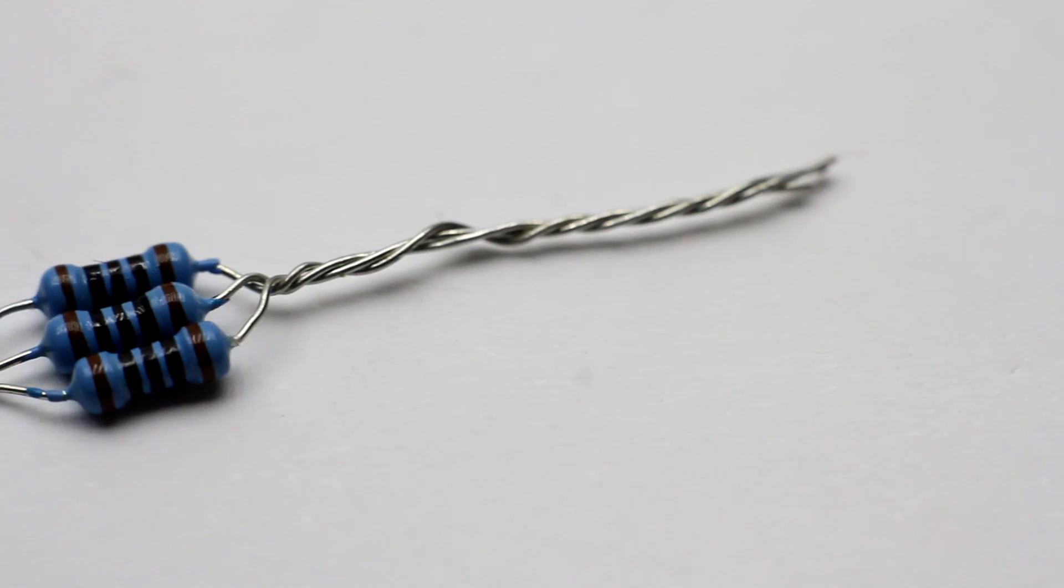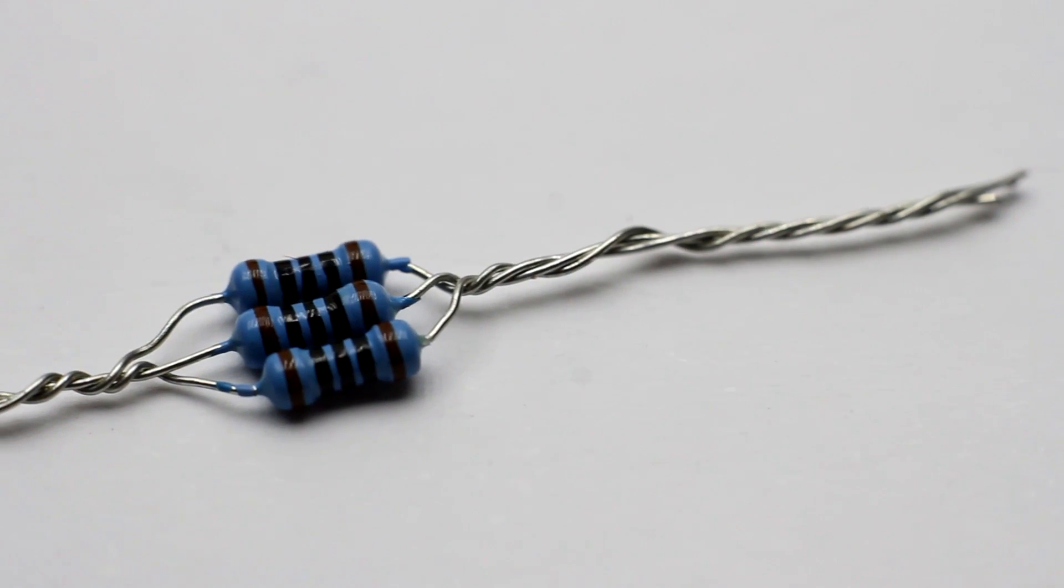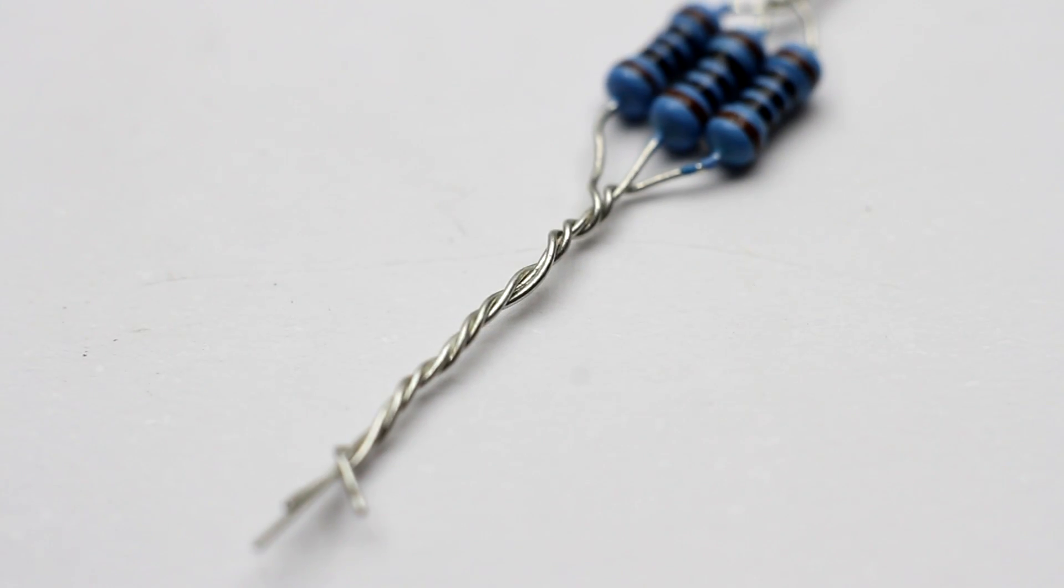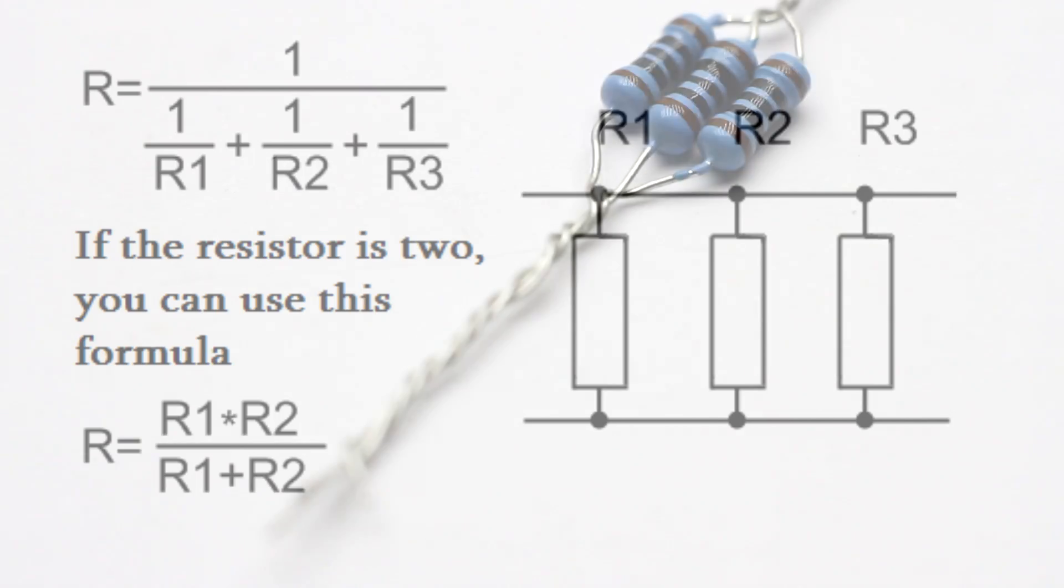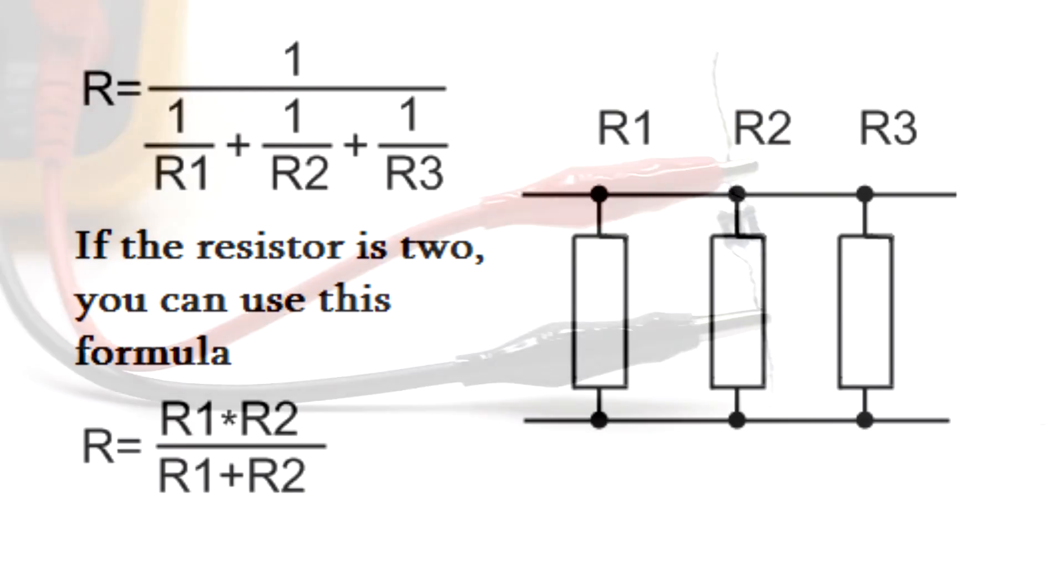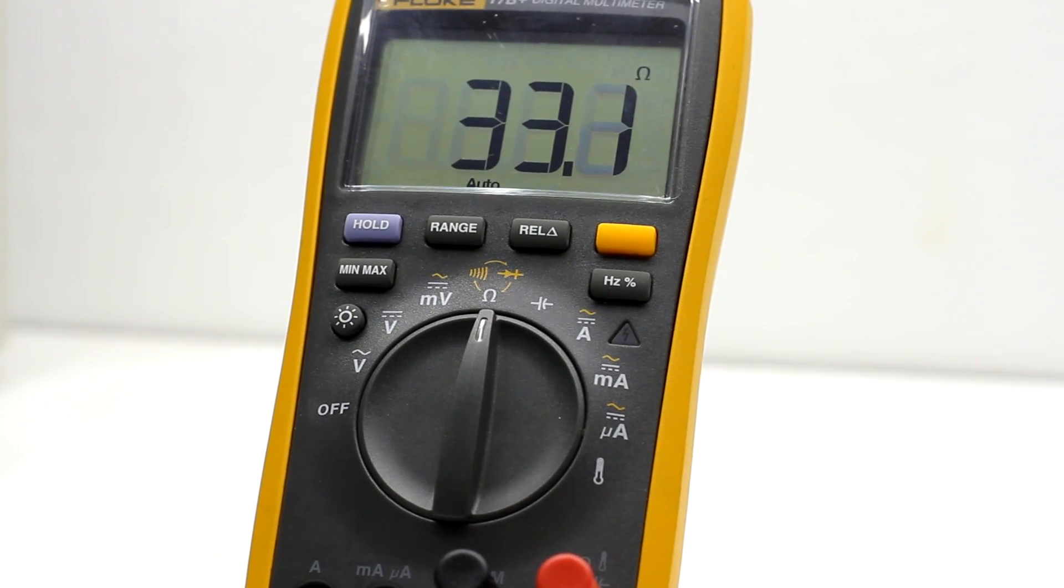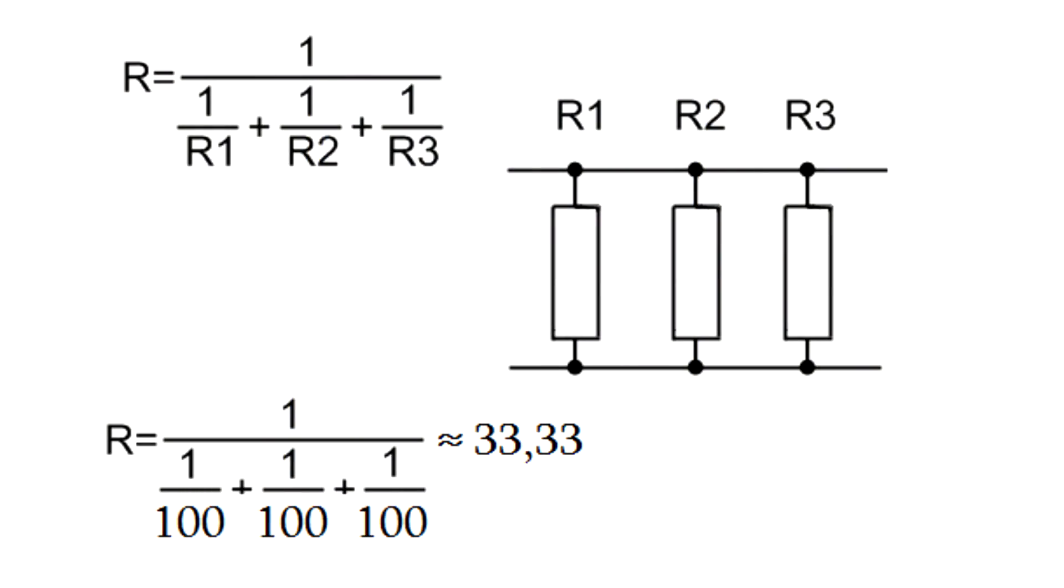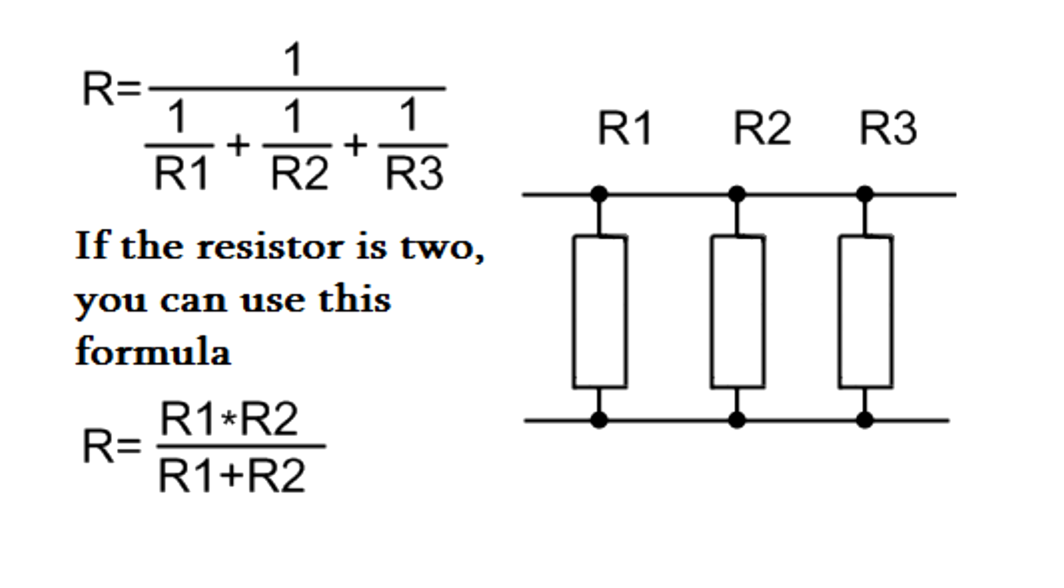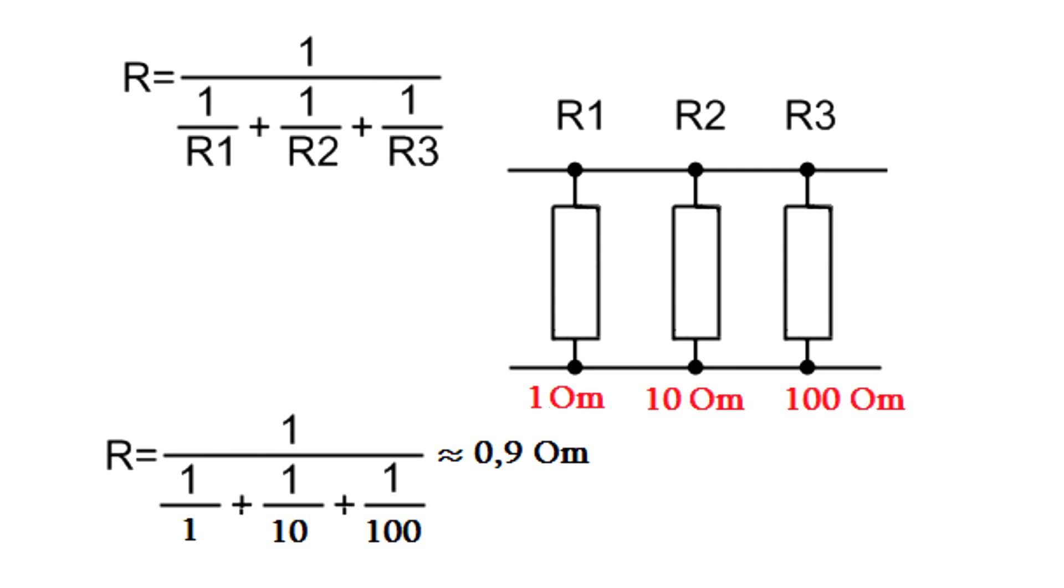In parallel connection, the opposite occurs. We must sum the values inversely proportional to the resistances. For example, if three resistors 100 ohms connected in parallel, the total resistance calculated of the formula will be 33 ohms. This same formula is used in the case for parallel connection of resistors with different resistance.